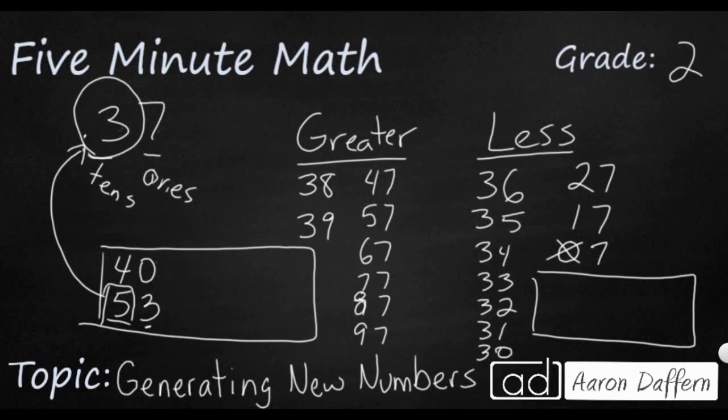Same thing if I wanted to do 62. Even though this 2 is smaller than the 7, that's perfectly fine. Because my tens digit, which is my largest digit in this number, is much larger.